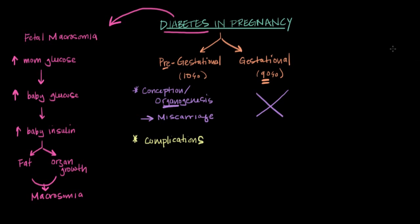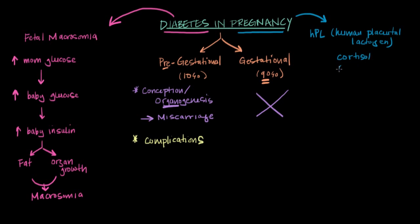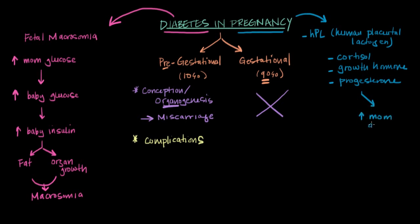A lot of why women can become diabetic during pregnancy has to do with hormones released during pregnancy — hormones such as HPL (human placental lactogen), cortisol (the body's main stress hormone), growth hormone, which is released in large quantities during pregnancy, and progesterone, which is exceptionally important for the maintenance of a healthy pregnancy. These hormones increase mom's production of glucose to make sure the fetus has enough of its primary fuel source.